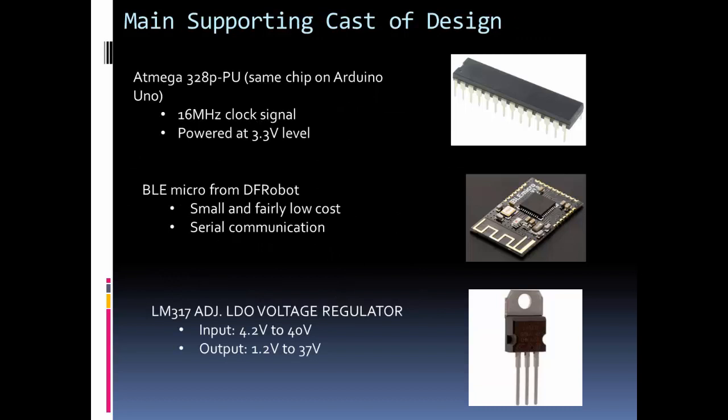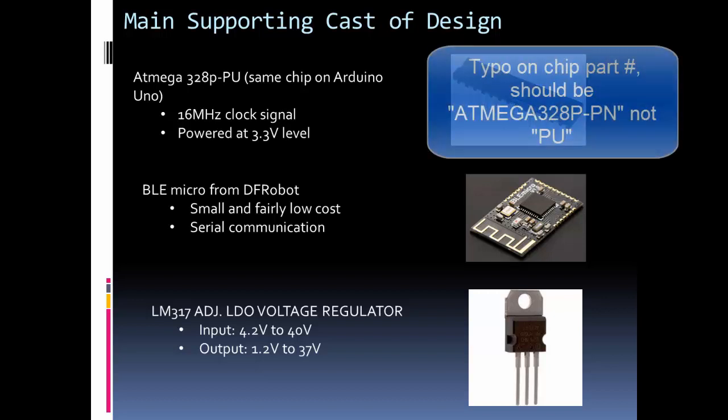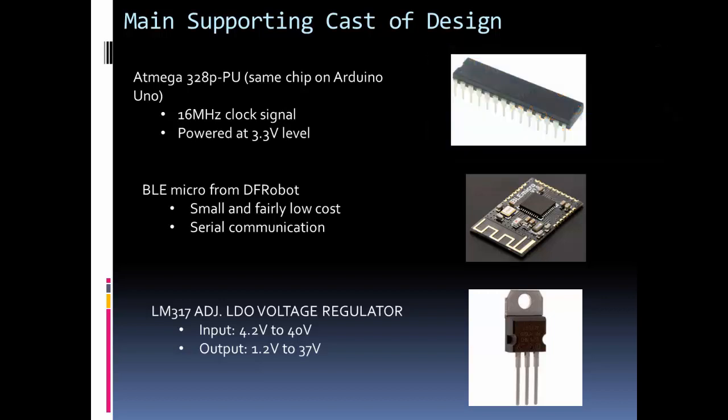Let's look at some of the main supporting cast that's going to be on our Internet of Things Arduino development board. We're going to be using the ATmega328P, which is the chip that's on the Arduino Uno. We'll be using a 16 megahertz clock, just like the Uno. What's different from the Uno is we're going to power it with 3.3 volts, and we'll use that for all our digital communication.